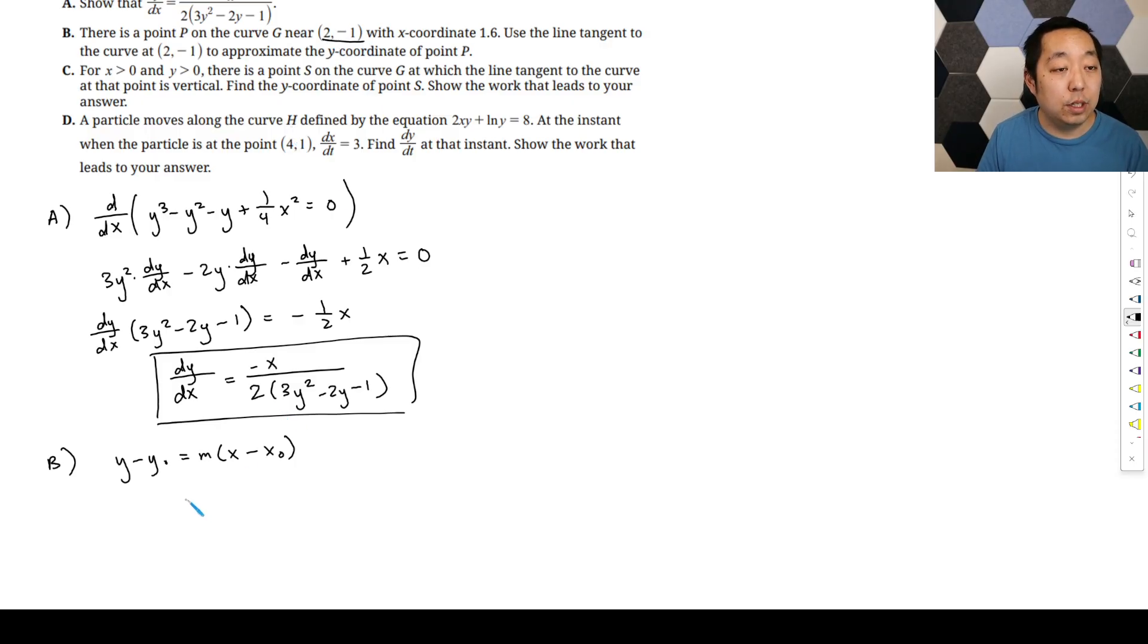Well, they give us the point. So y minus negative 1 is equal to m x minus 2. Awesome. Perfect. Point's done. Slope. Slope is going to be the derivative.